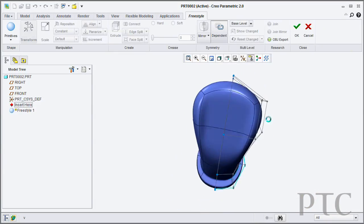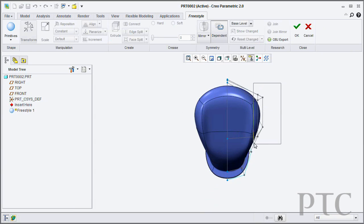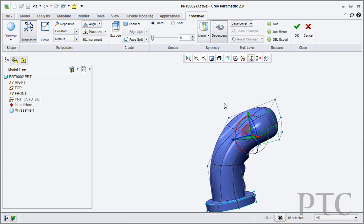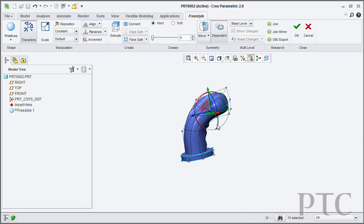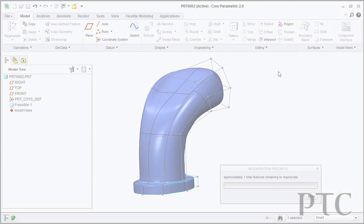Equally, a lot of products that you build are symmetrical. Freestyle has the ability within the feature to set up a symmetry plane. Any changes I make on one side of the control mesh will then automatically be reflected on the other side.